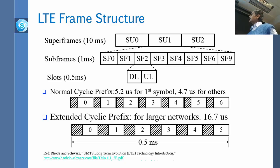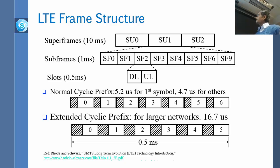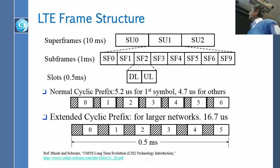Each subframe consists of two slots, each half a millisecond long. During one slot you can do the downlink, during the other you can do the uplink. During these slots you send symbols — you have a symbol and you have a cyclic prefix. So this is symbol 0, 1, 2, 3, 4, 5, 6 — seven symbols.